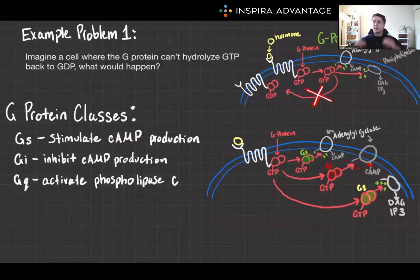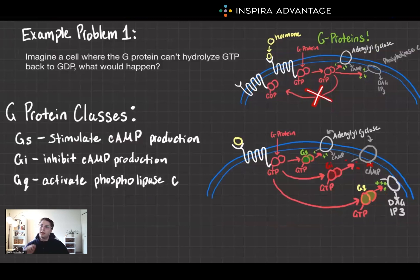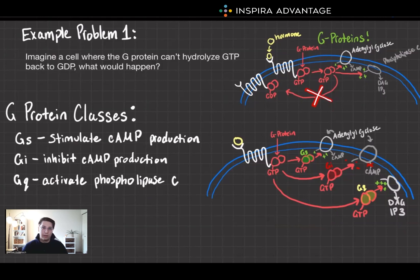Now that we've got a good grasp on how G-protein signaling works overall, there are three different big classes of G-proteins you should at least have a peripheral awareness of for the MCAT: Gs, Gi, and Gq proteins. Gs and Gi proteins are straightforward because the S and I mean something relevant. Gs is going to stimulate the production of cyclic AMP, an important secondary messenger in many cells. Whereas Gi proteins — the I stands for inhibit — they're going to inhibit cyclic AMP production. They also play roles in regulating ion channels and other cellular pathways.